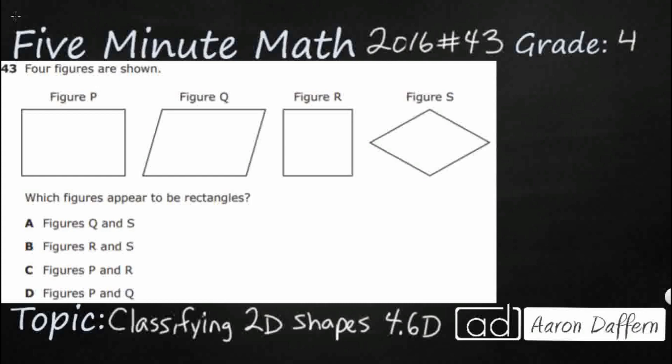So we have a seemingly simple problem: which figures appear to be rectangles? Well, that's easy. We learned this in pre-K. We've got figure P. But look at our answer selections. It's got to be at least two of them. So we need to step back a moment.